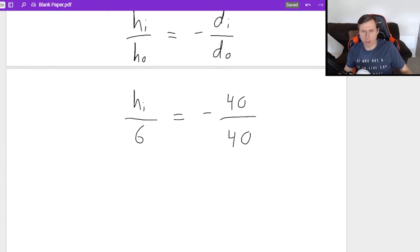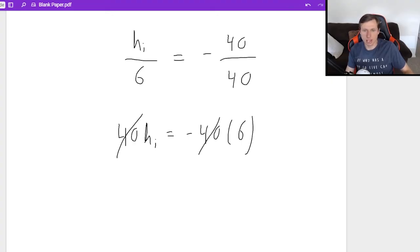So if I want to solve this, I can just cross multiply 40 HI equals negative 40 times 6. Divide both sides by 40. They cancel. And your image height is going to be negative 6 centimeters.